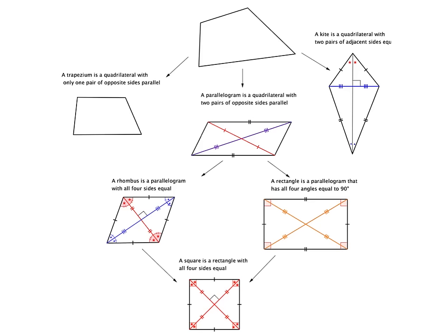Today we're going to be looking at further properties of quadrilaterals, but this time in relation to the diagonals of the quadrilaterals. The diagonal of a quadrilateral is the line that goes from one corner to the opposite corner. That's your diagonal.